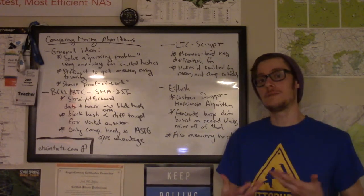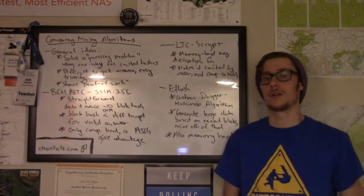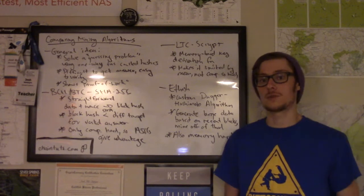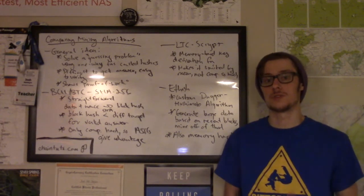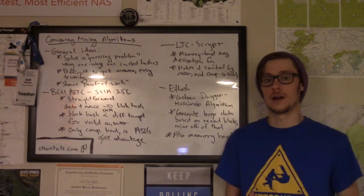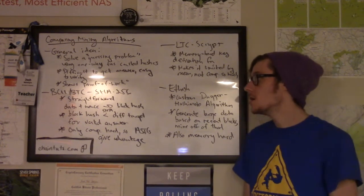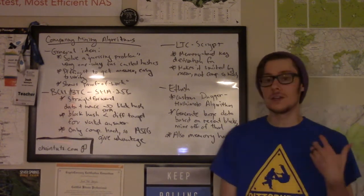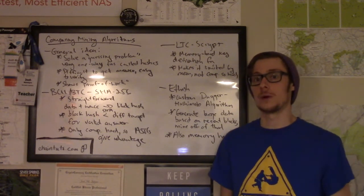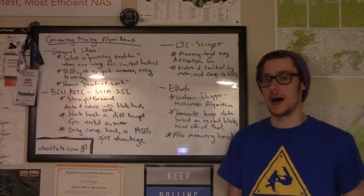There are some differences in approaches to proof-of-work algorithms that different blockchains use, and they all have sort of different pros and cons when it comes to security, centralization, and barriers to entry for people that want to do mining. Let's first talk about the mining algorithm used in Bitcoin Cash and Bitcoin BTC, and that's SHA-256 mining.